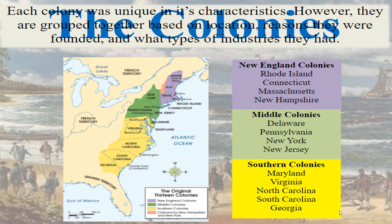Each colony was unique in its characteristics. However, they are grouped together based on location, reasons why they were founded, and what types of industries they have. On our map, this area is not the United States — that would be Florida, but right now this is a Spanish territory. Who was already here? The Native Americans were already here. When the English came over, they started here in this area. These are our 13 colonies.